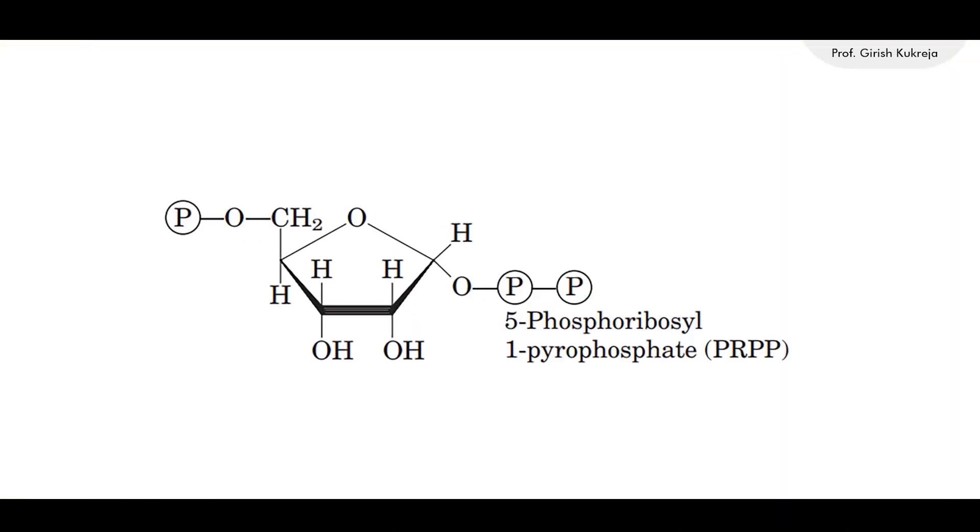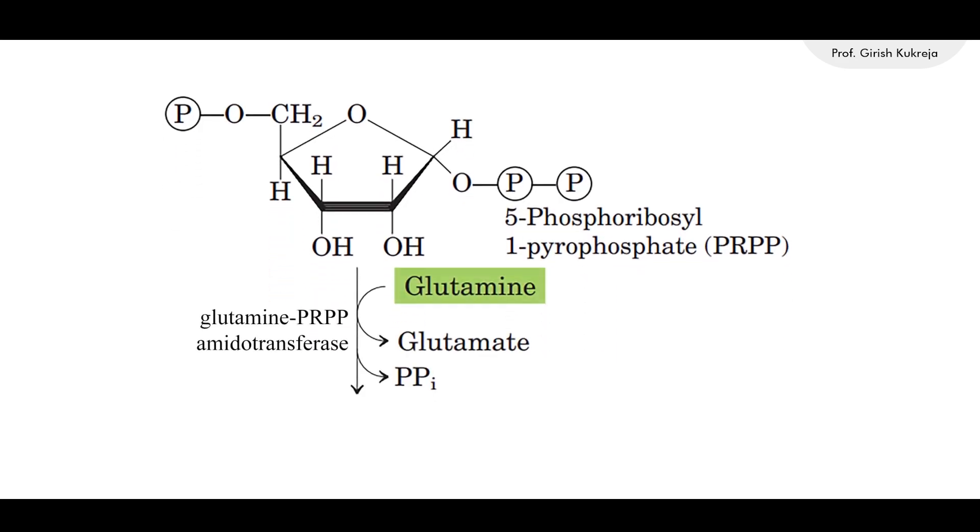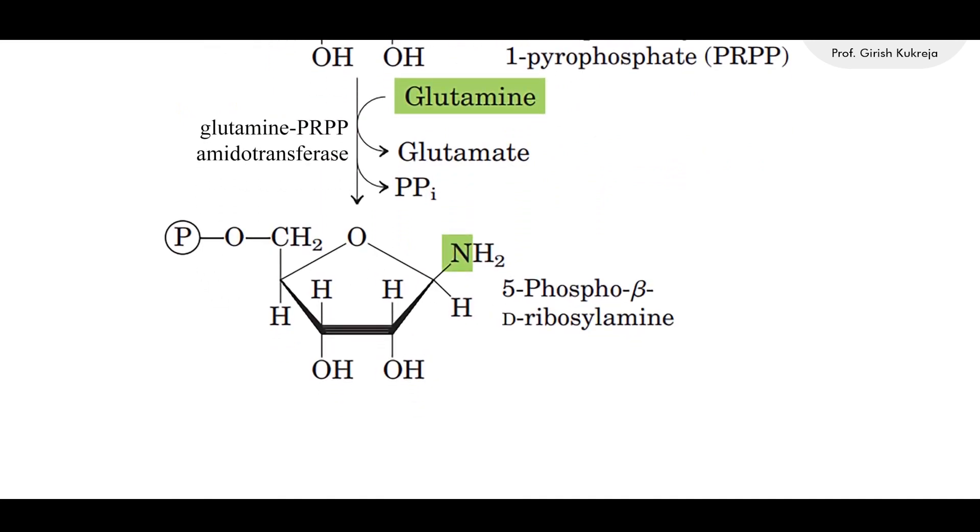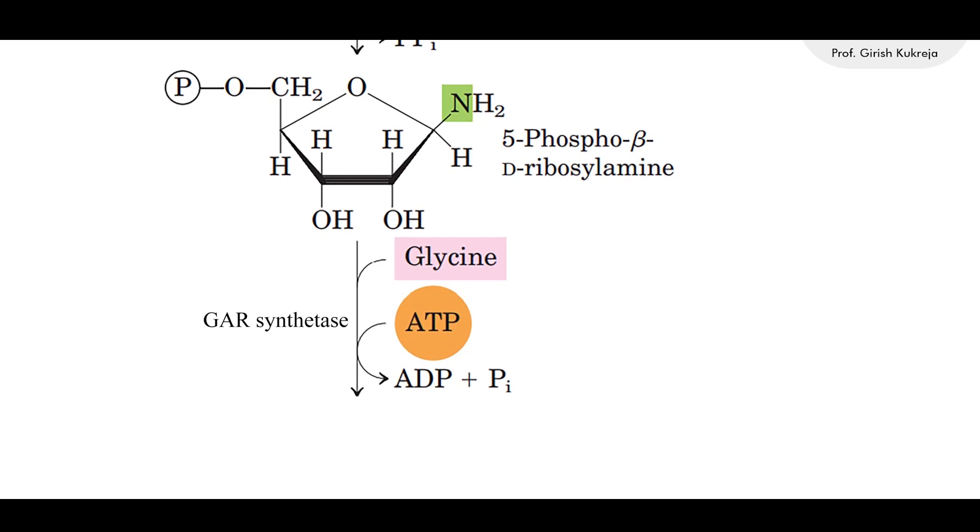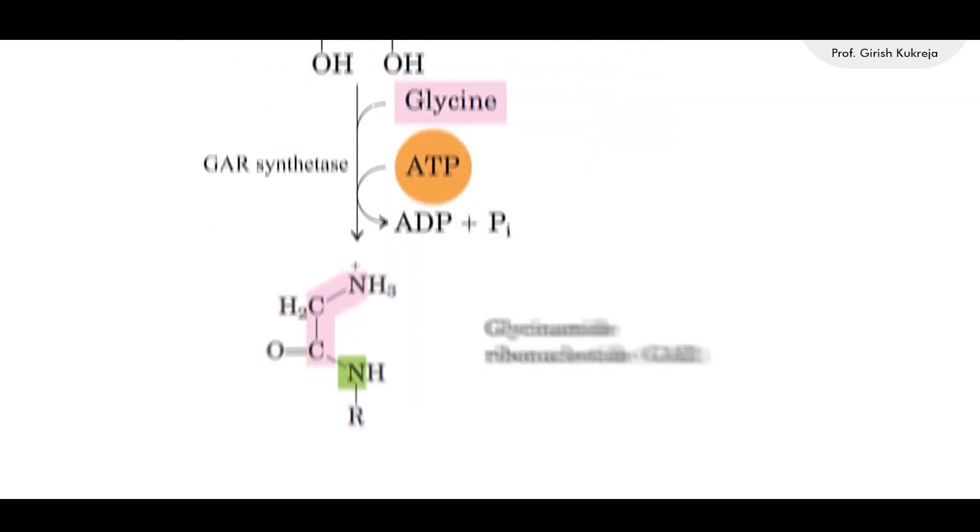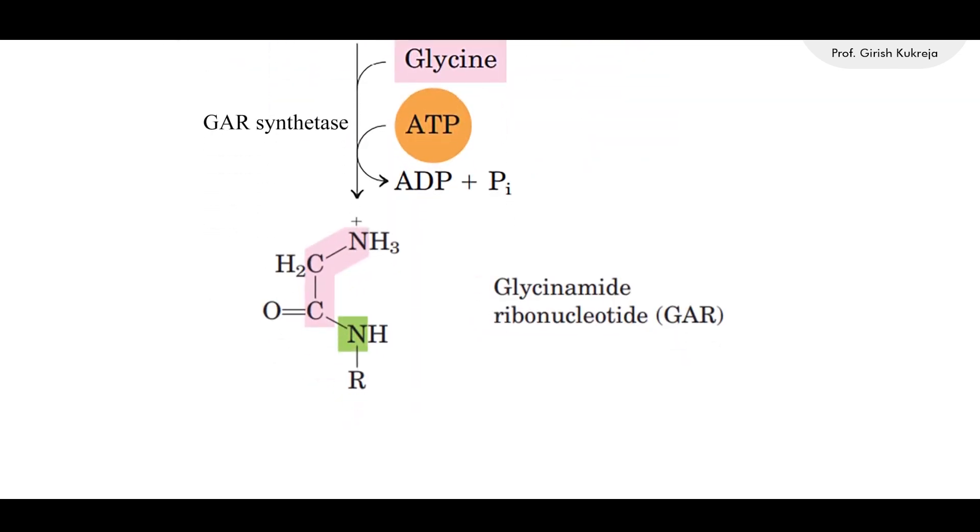In the first step, the amino group from glutamine is attached to the first carbon of PRPP, forming a highly unstable 5-phospho-beta-D-ribosylamine. Next, glycine after activation by hydrolysis of ATP adds three carbon atoms, forming glycinamide ribonucleotide, GAR.